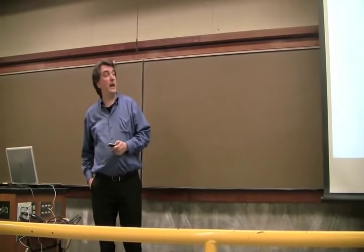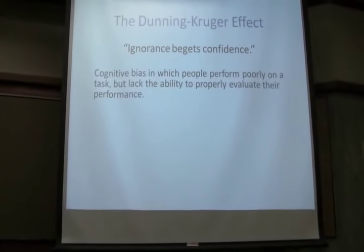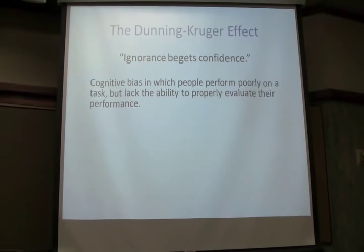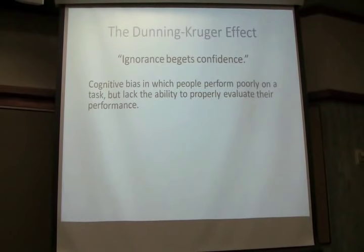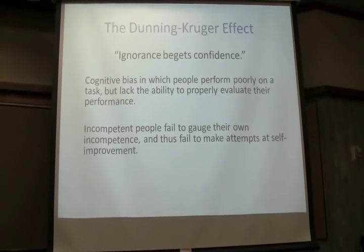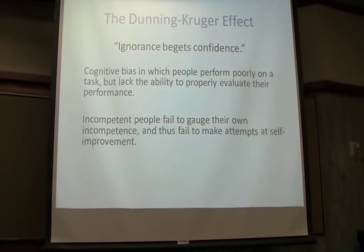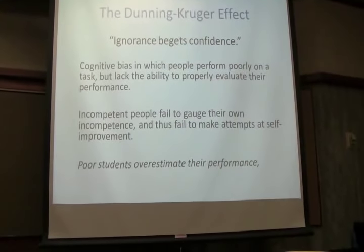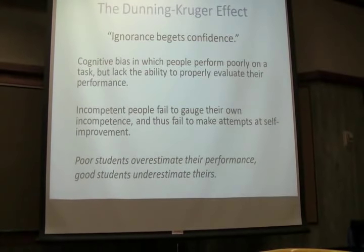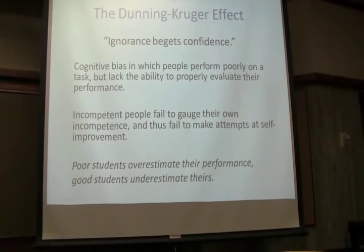Which can be stated as this: Ignorance begets confidence. That is, it's a cognitive bias where people perform poorly on a task but they don't realize that they're performing poorly because they lack the skills and knowledge to assess themselves accurately. Incompetent people fail to gauge their own incompetence and thus they fail to make attempts at self-improvement. In the academic setting, you can say this as poor students overestimate their performance and good students underestimate theirs. So keep that in mind as you look at all of these theories.